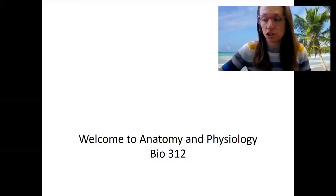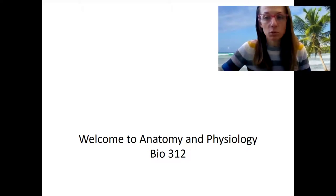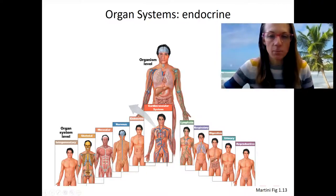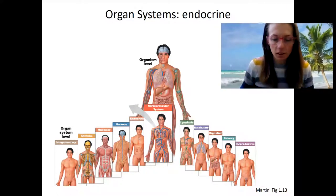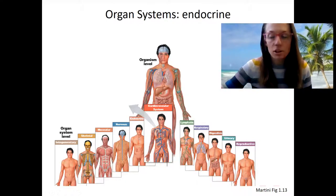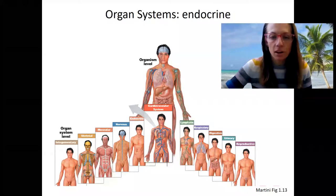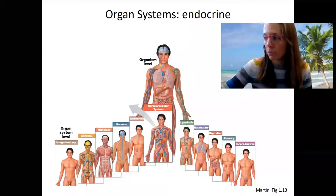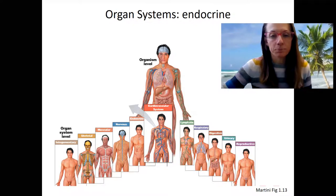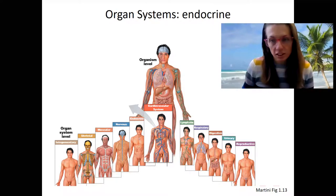Welcome to the first lecture for anatomy and physiology for the spring. We're going to start with the endocrine system. So if you recall in the fall, we did a couple of organ systems. We've talked about the integumentary system, skeletal, muscular, and nervous system are what we focused on in the fall. We also got an overview and introduction to things like structure and function, homeostasis, and cell signaling.